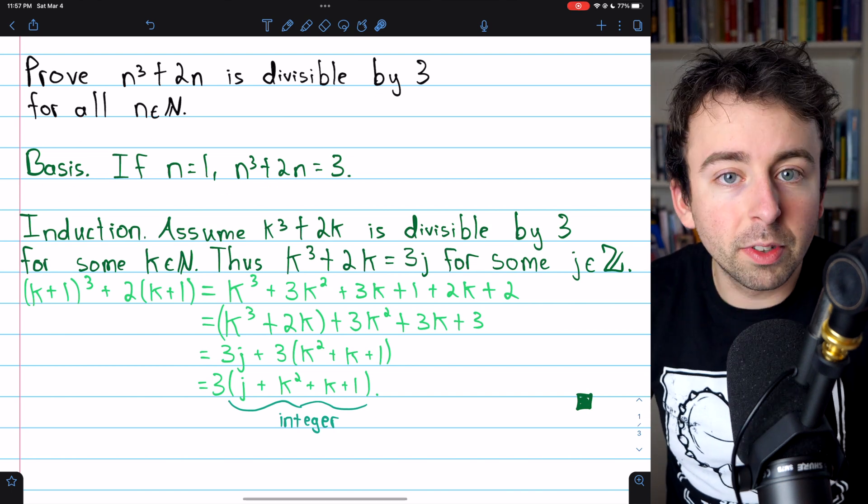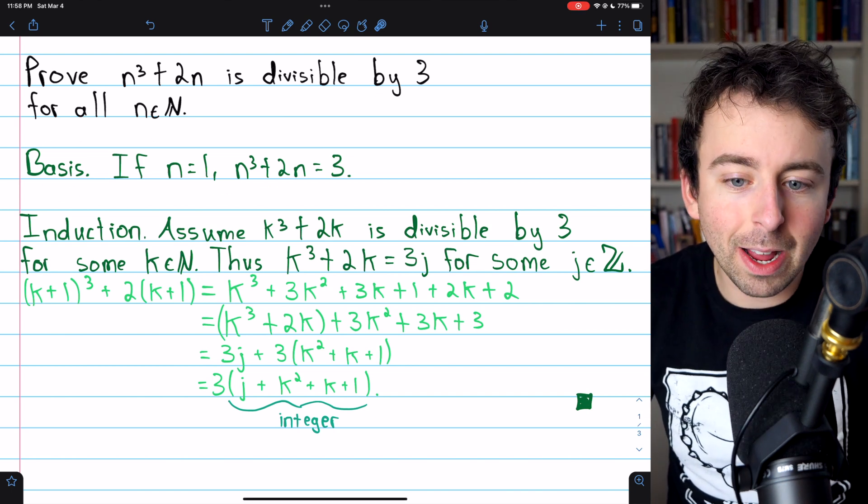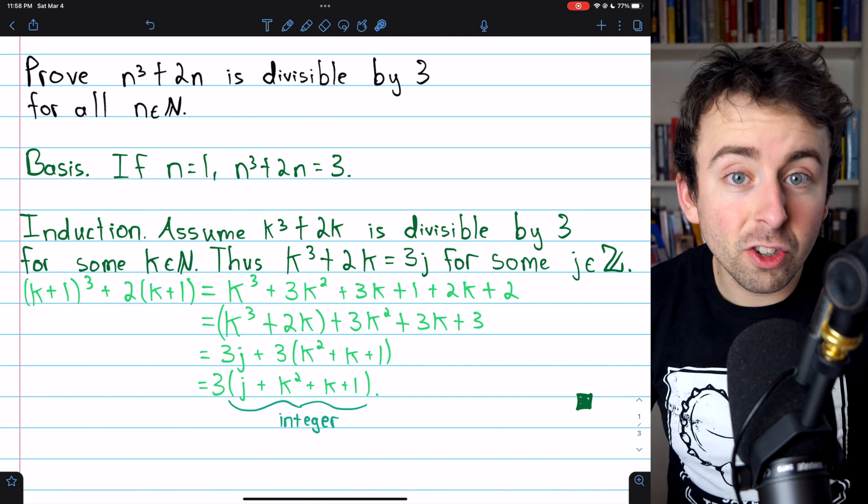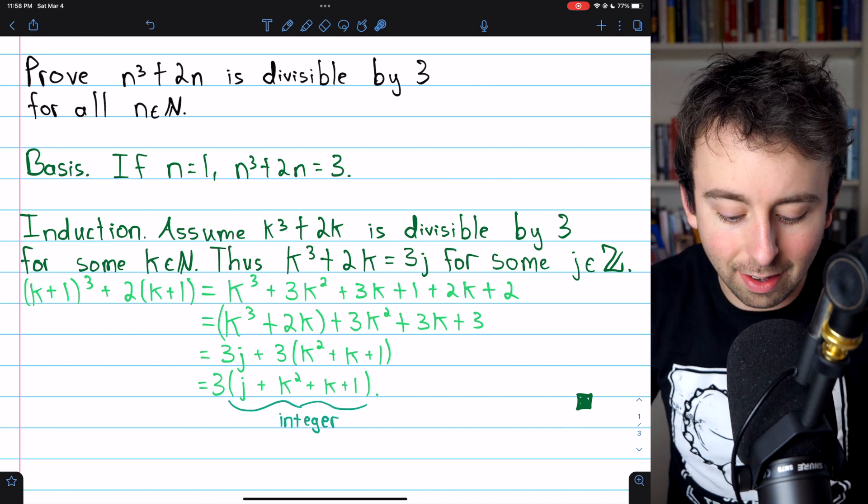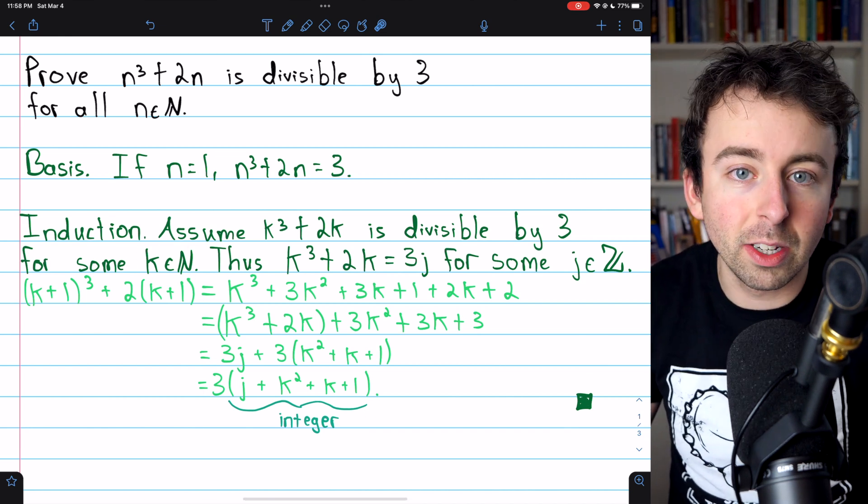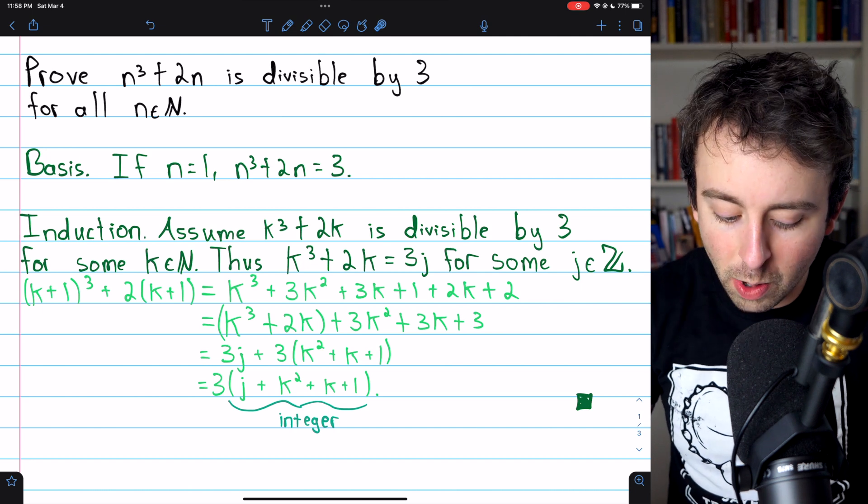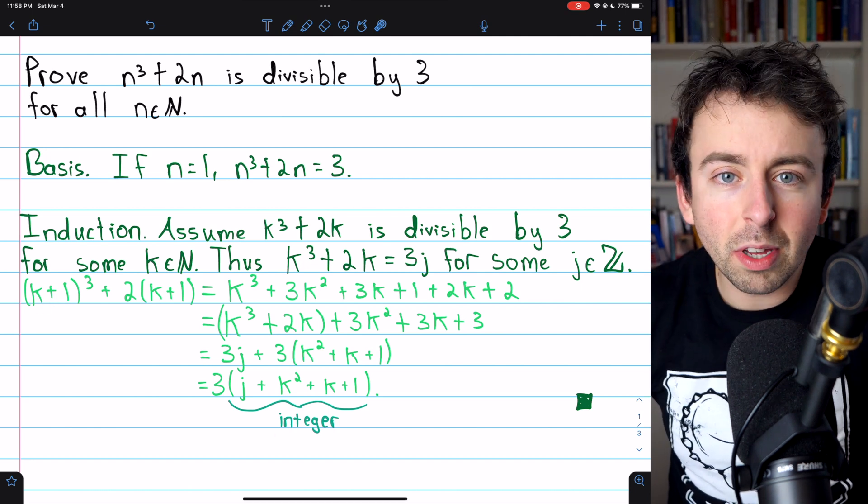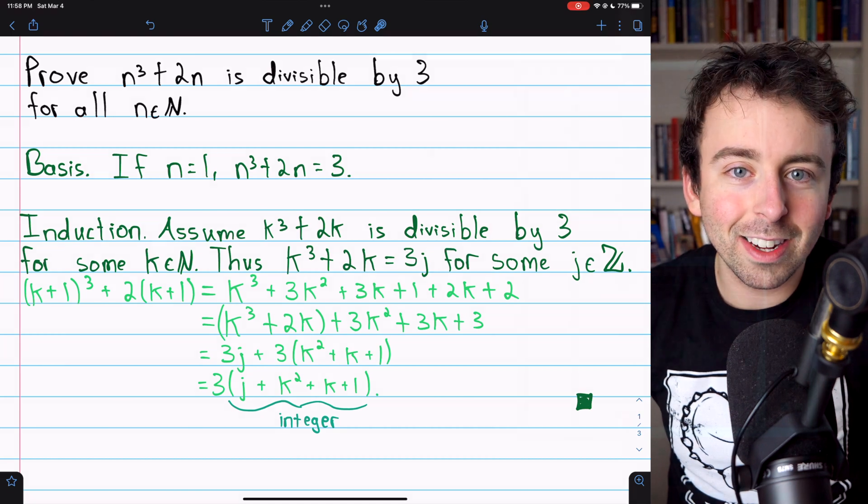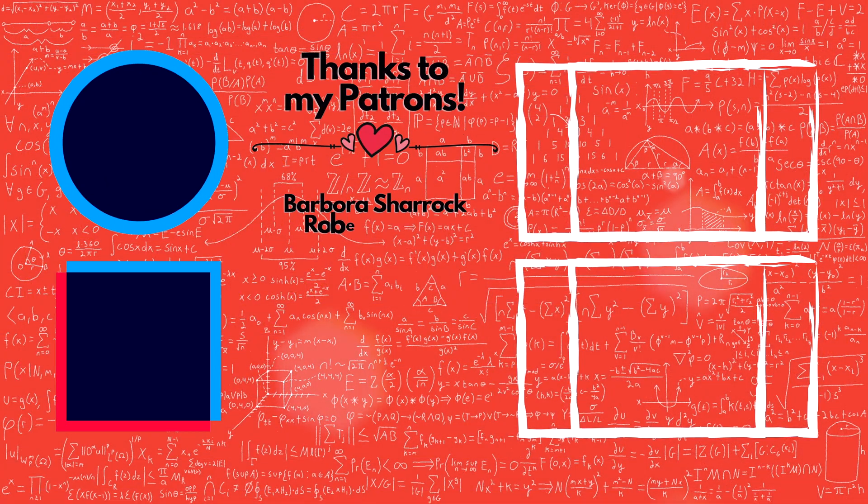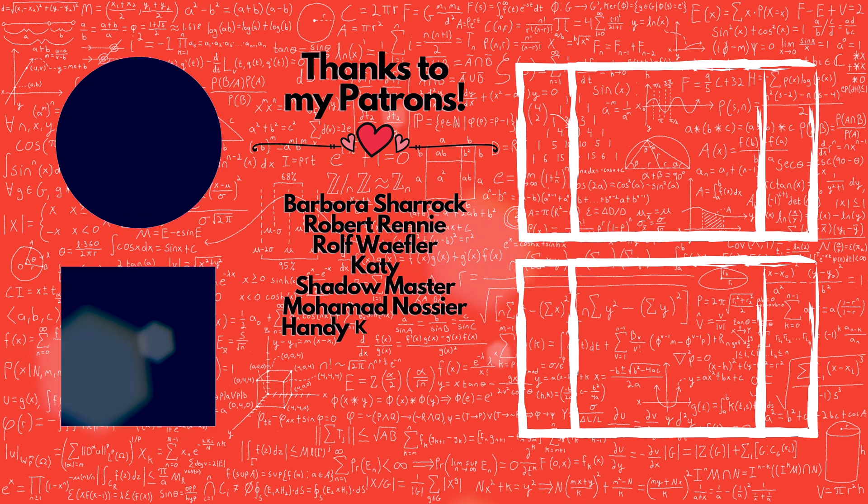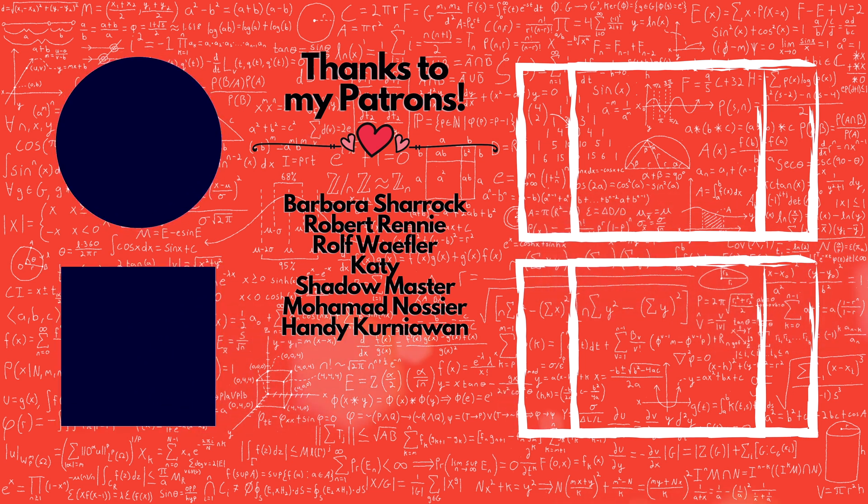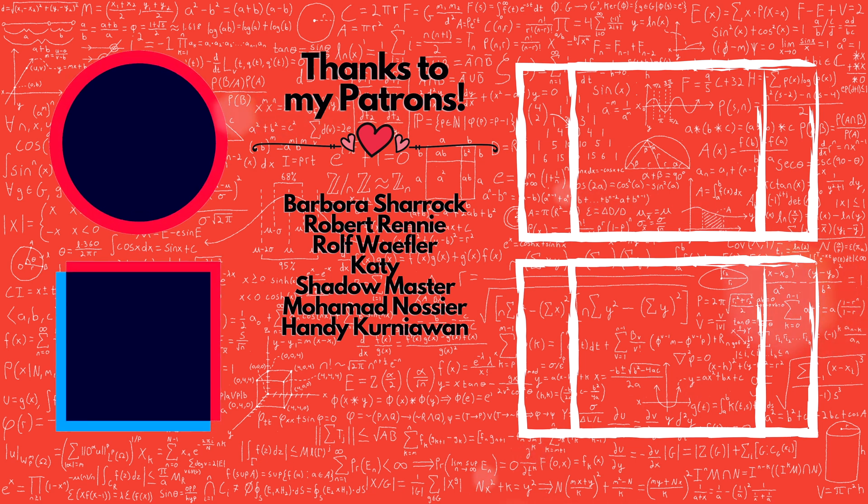We begin with the basis step, proving the result is true for our first number of interest. Then in the induction step, we use an induction hypothesis, where we assume our result is true for some number of interest. In this case, that means for some positive integer, and show that forces the result to be true for the next positive integer. Hope this was helpful. Let me know in the comments if you have any questions. We'll see you next time.